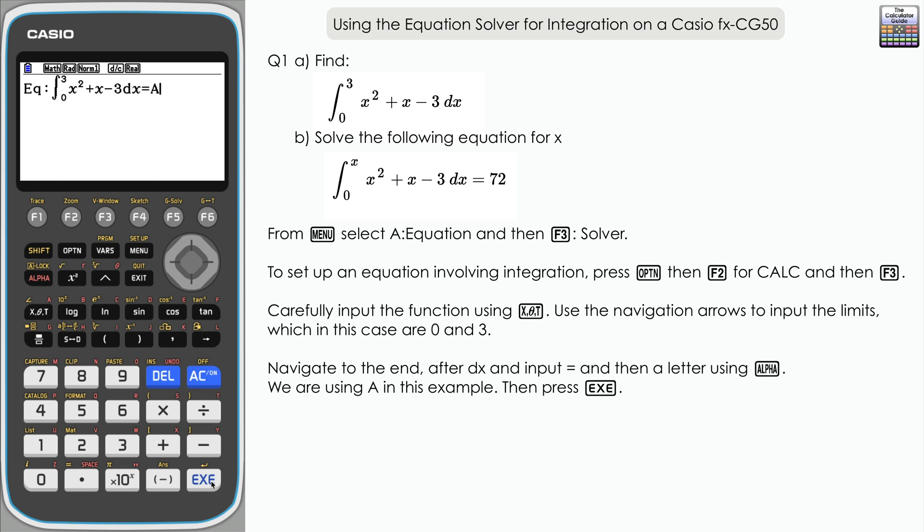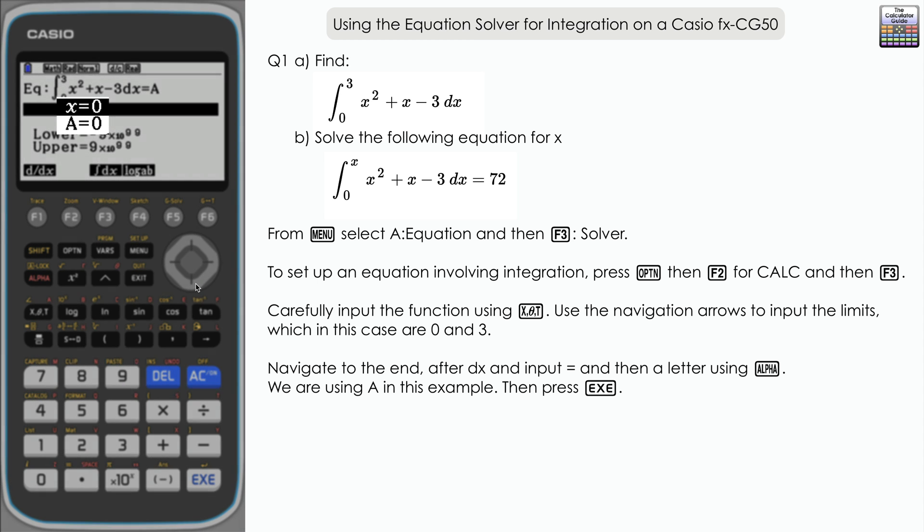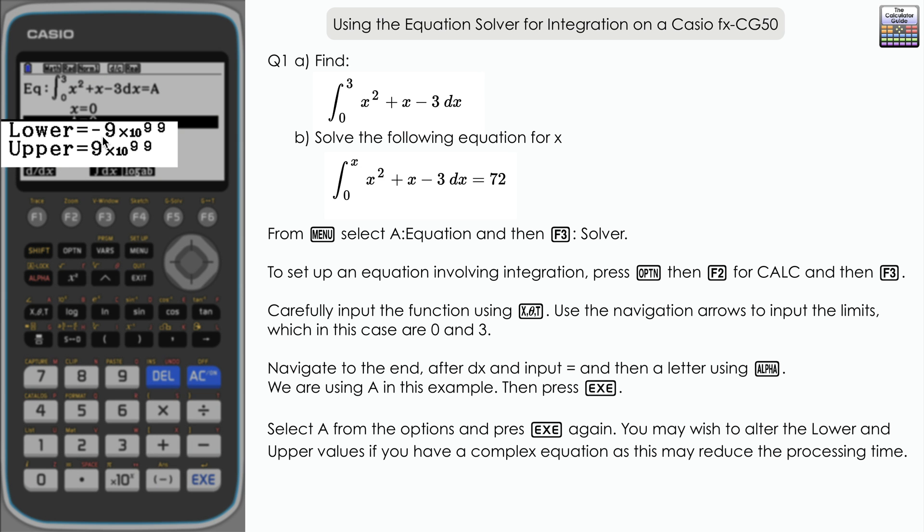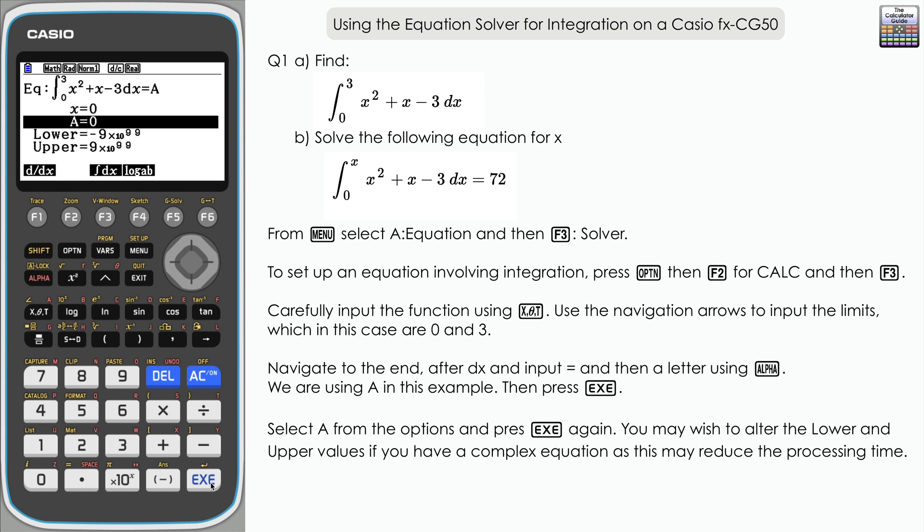You can see we've got two choices of variable we can solve. We want to find A, our answer to this, so navigate down and have A as your selection. The lower and upper limits of values that are going to be tried show we've got a good range. If you press execute at this point, we're just going to consider the top result there: A equals 4.5. Our answer to part A is 4.5.